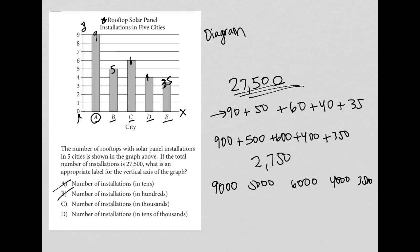So 9,000 plus 5,000 plus 6,000 plus 4,000 plus 3,500, and that does equal 27,500, which the question tells us is the value that we're looking for when we add up all of those vertical numbers. So therefore, choice C is the best answer to this question.